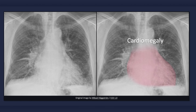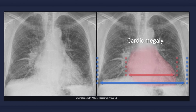Cardiomegaly, particularly in concert with other findings, is a suggestive feature of congestive heart failure. However, keep in mind that congestive heart failure can occur in the presence of a normal-sized heart. Cardiomegaly is said to be present when the cardiothoracic ratio is greater than 0.5 — that is, when the largest transverse distance between the left and right heart borders of the cardiac silhouette is greater than half the width of the thorax. In this image, the cardiothoracic ratio is approximately 0.6.